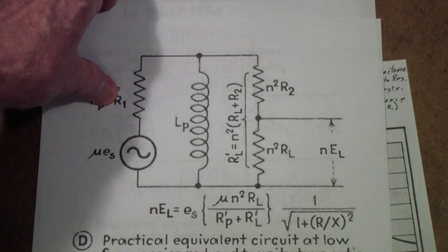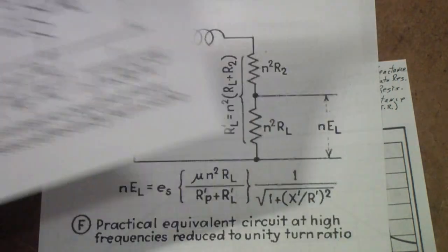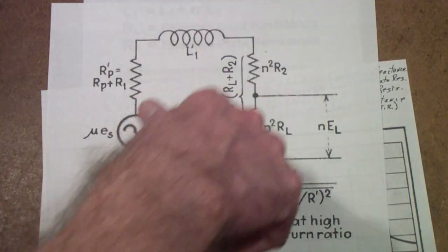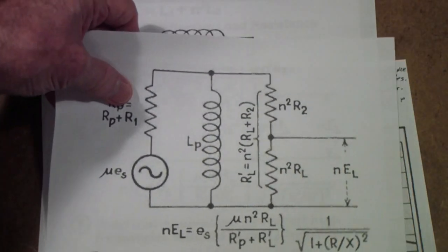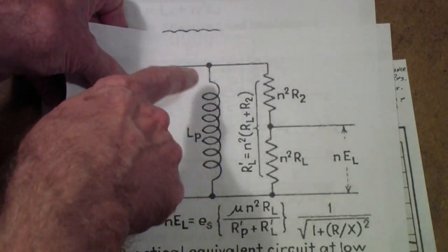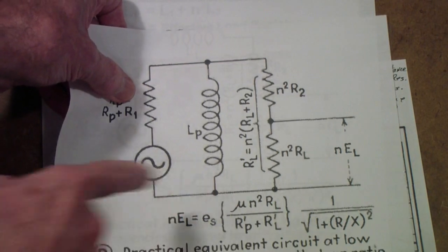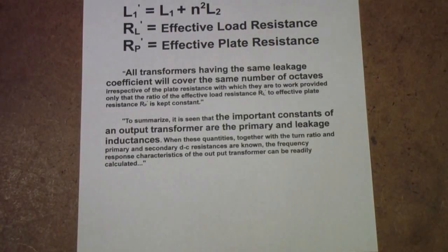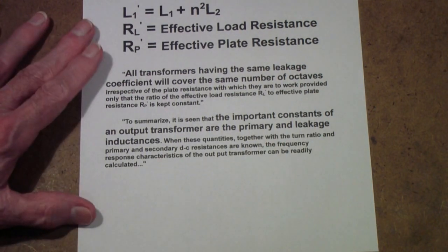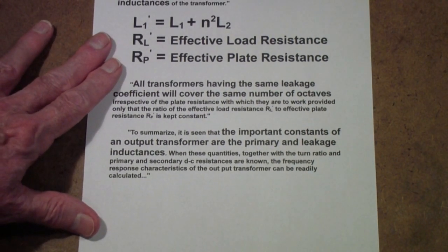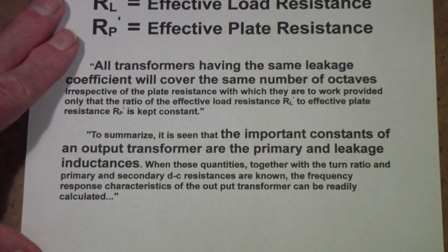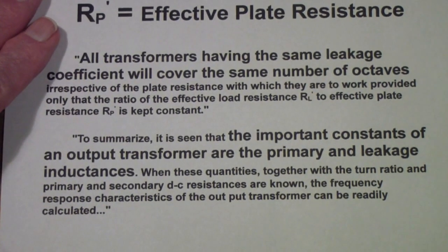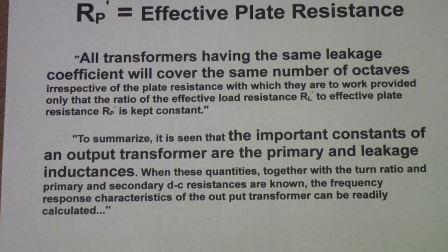In the one case, the leakage inductance is inserted in series. In the other, the primary inductance is inserted in shunt. And from that, as he says at the conclusion, that if you know the primary and leakage inductances, you can compute the frequency response of a class A power amplifier stage.